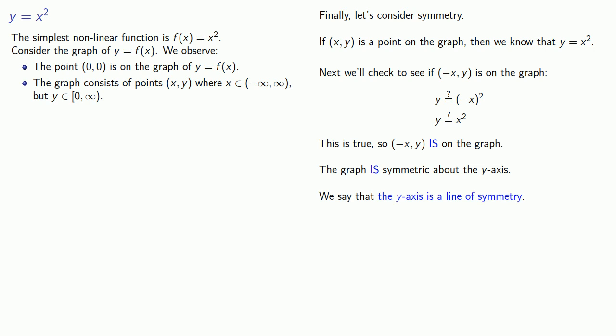We'll add a little detail to this. Because it's symmetric about the y-axis, we say that the y-axis is a line of symmetry. Equivalently, the y-axis is the same thing as the line x equals 0. So we say that the line x equals 0 is a line of symmetry.